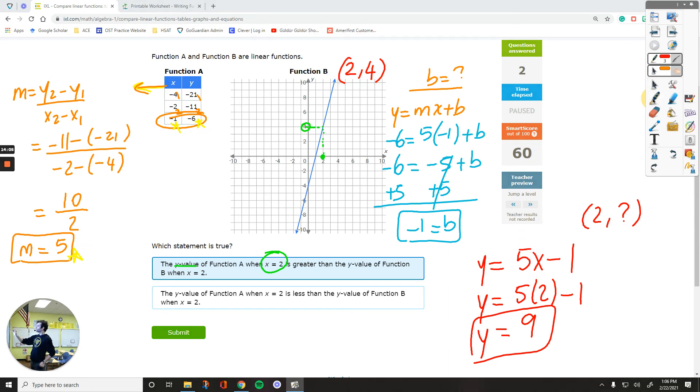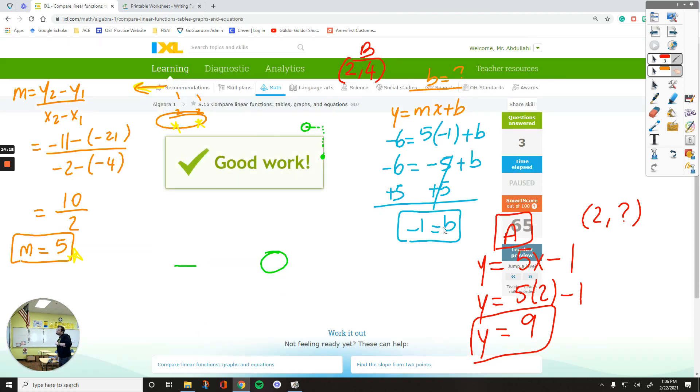So this is function a. That has a 9. This is function b. That has a 4. So the answer is going to be the first one. Make sure you know which one is which.